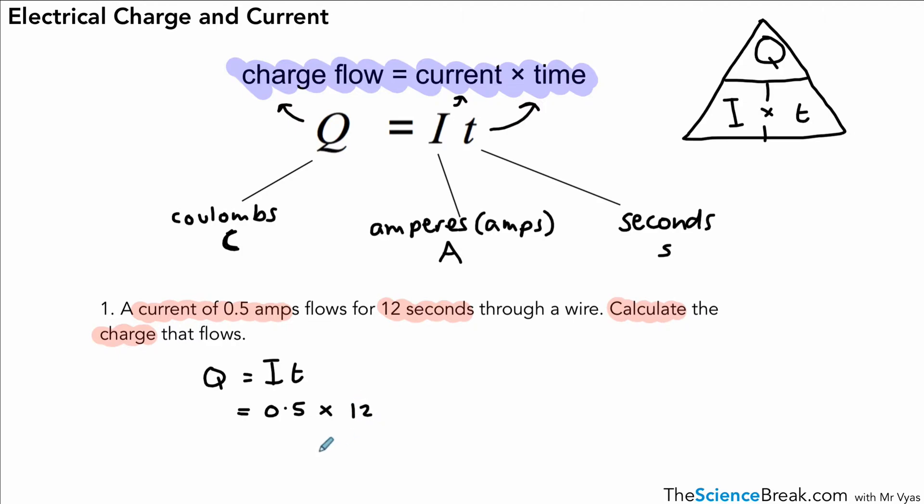So current is 0.5 amps from the question. And time is 12 seconds. That comes from the question. Gives us an answer of 6C, which is 6 coulombs.